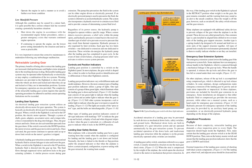The emergency extension system lowers the landing gear if the main power system fails. Some airplanes have an emergency release handle in the flight deck connected through a mechanical linkage to the gear uplocks, which when operated releases the uplocks and allows the gear to free-fall or extend under its own weight. On other airplanes, release of the uplock is accomplished using compressed gas directed to uplock release cylinders. In some design configurations where emergency extension by gravity alone is impossible or impractical, provisions are included for forceful gear extension using hydraulic fluid, compressed gas, or a manual system such as a hand crank. Hydraulic pressure for emergency operation may be provided by an auxiliary hand pump, an accumulator, or an electrically powered hydraulic pump depending on the airplane design.